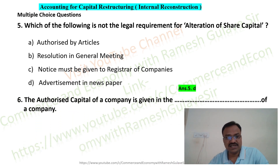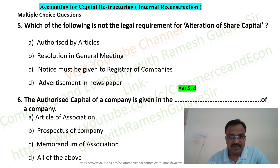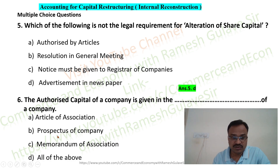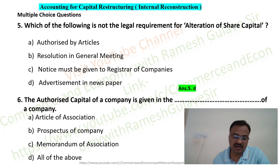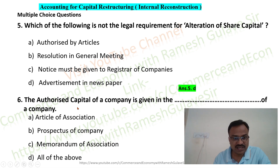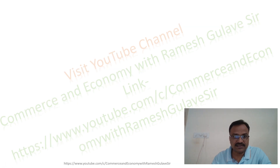The next question asks: the authorized capital of a company is given in the dash of the company. The authorized capital is given in the memorandum of association. The memorandum of association includes various clauses like the name clause and capital clause. In the capital clause, the authorized capital — also known as registered capital — is stated. Option C is the right answer.